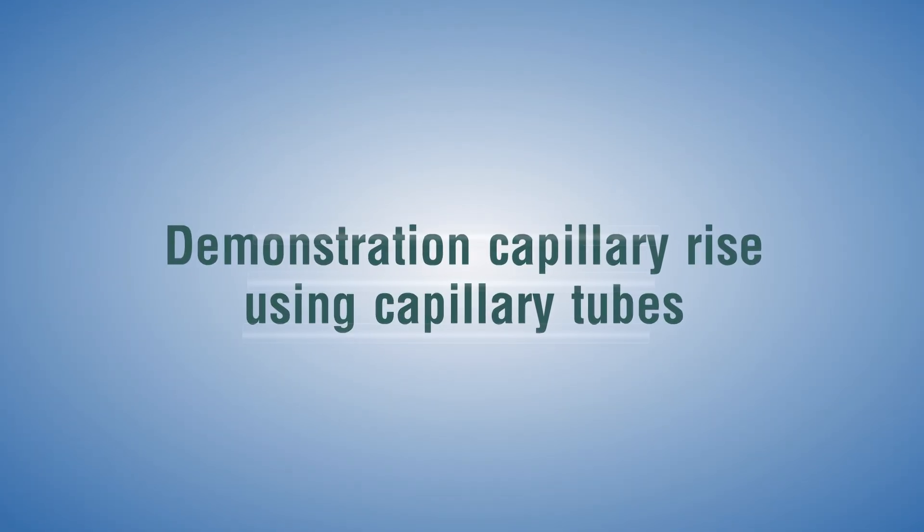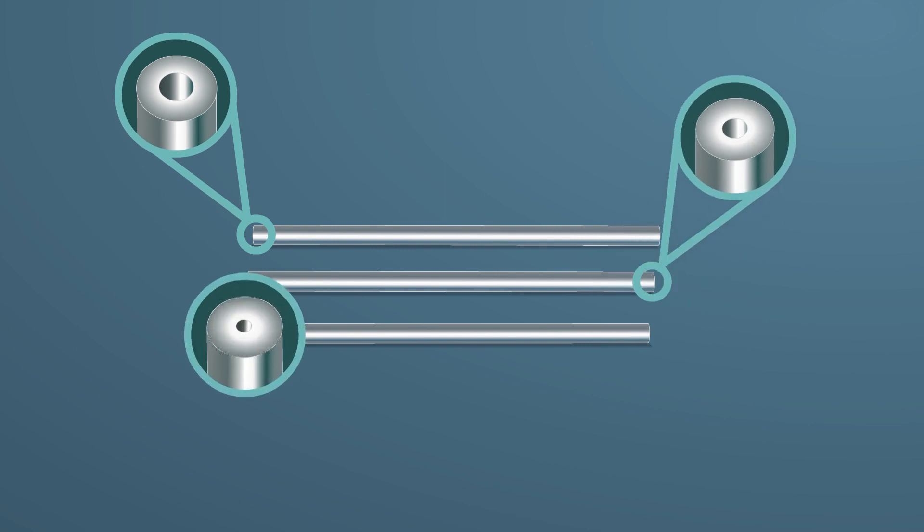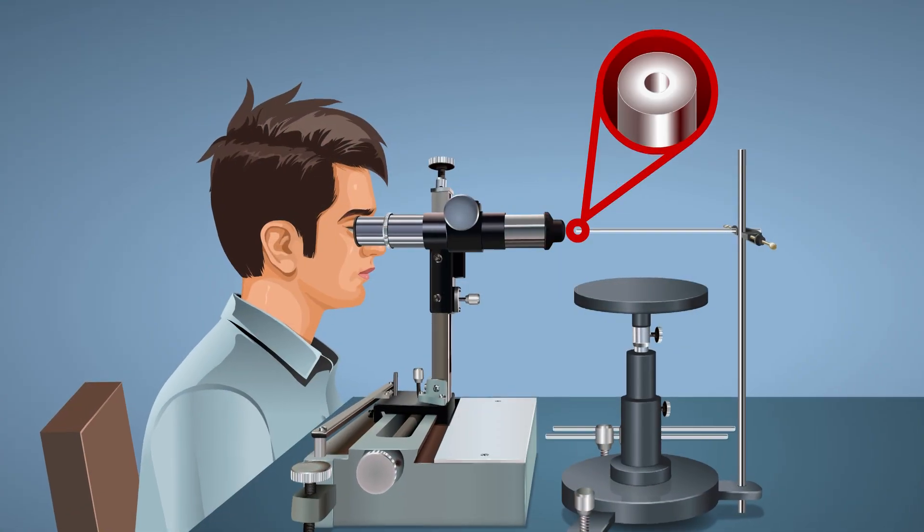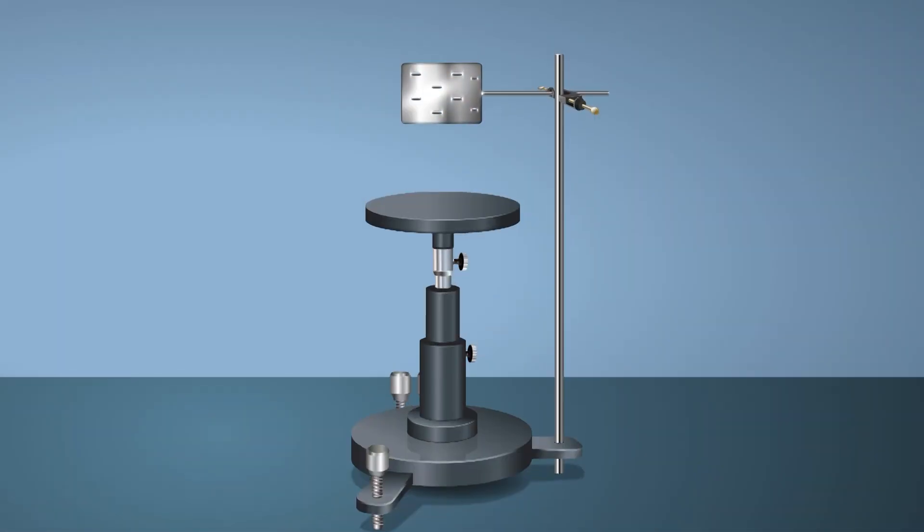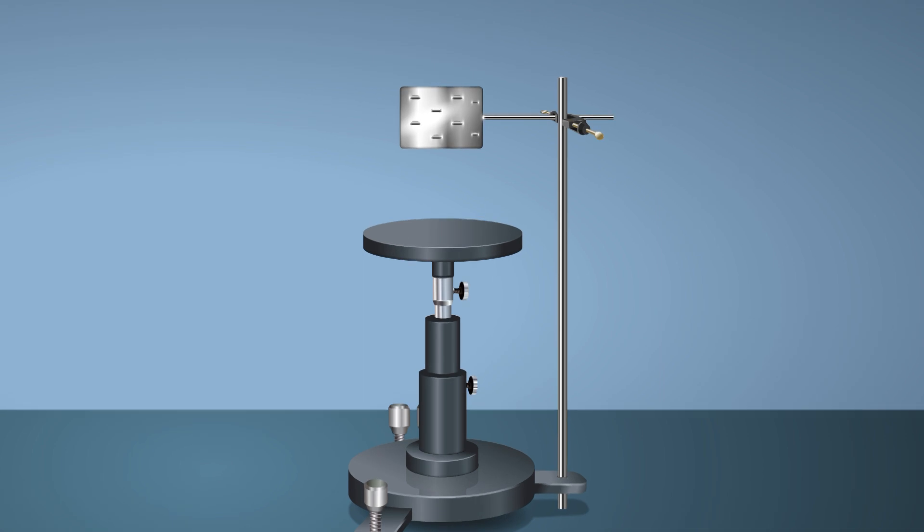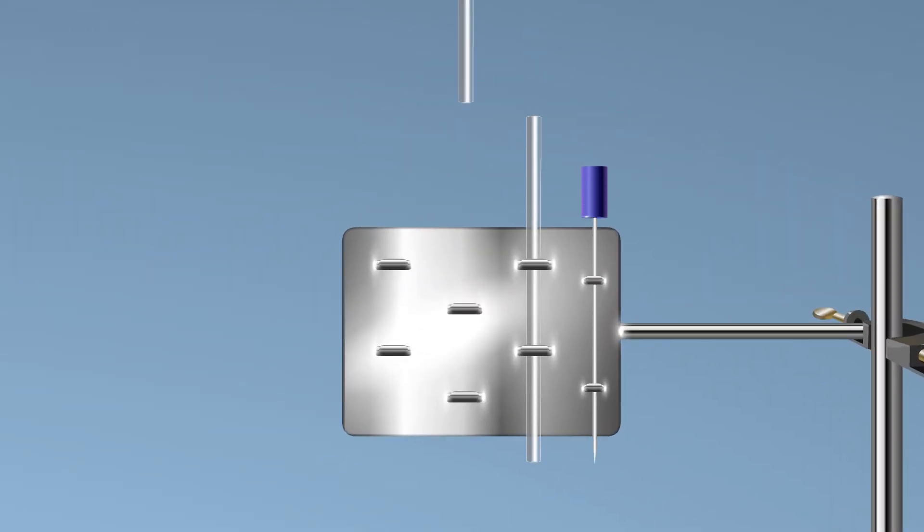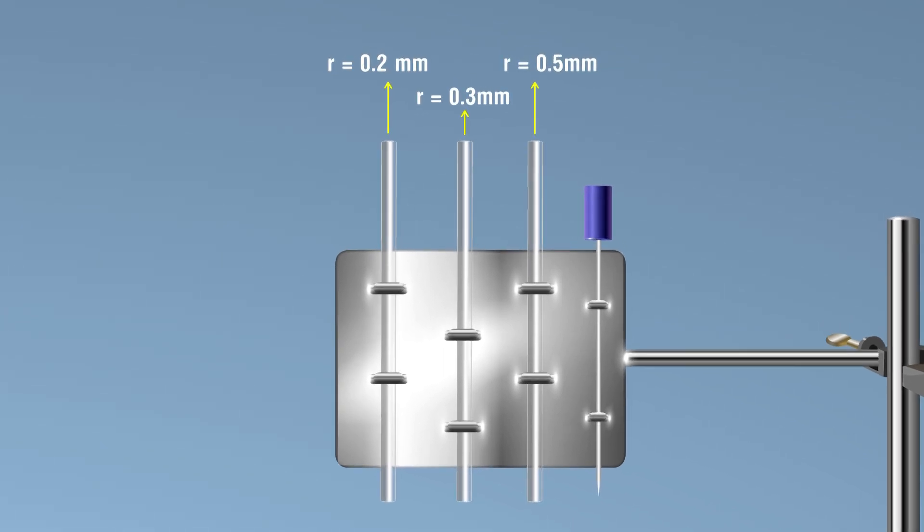Demonstration of capillary rise using capillary tubes: Take capillary tubes of different radius and same length. Find the radius of capillary tubes using a traveling microscope. Place the stand on the table. Fix capillary tubes together on the capillary tube clamp. Place capillary tubes in increasing order of radius.